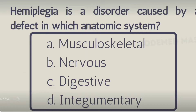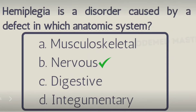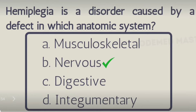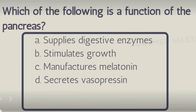Next question: hemiplegia is a disorder caused by a defect in which anatomic system? Option A: musculoskeletal, Option B: nervous, Option C: digestive, Option D: integumentary. The right answer is Option B, nervous system. Hemiplegia is one-sided paralysis; it happens due to brain or spinal cord injuries, so it is related to the nervous system.